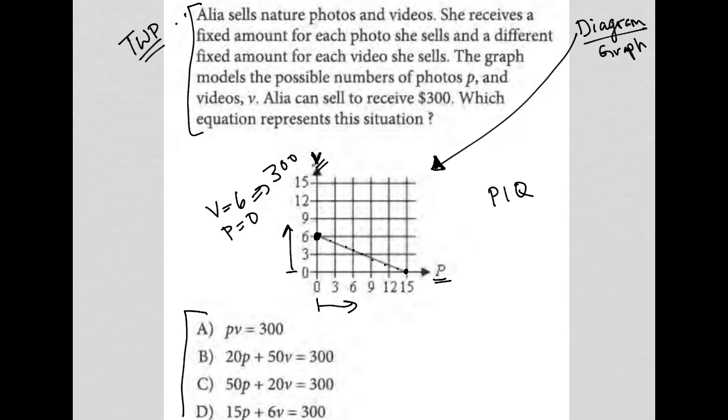I don't think that's going to work for choice A, right? Because 6 times 0 or 0 times 6 does not equal 300. So that's gone.